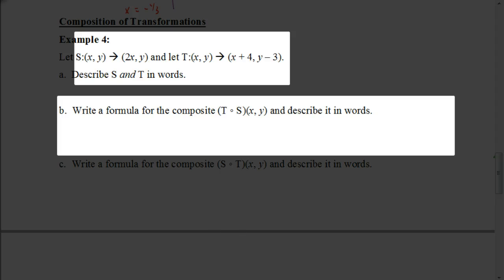So it's asking us to find the composite T following S for a coordinate (x, y). Now, just like the composition of functions, I could write this, if it makes it easier for you, like this. So this would be the composition of translation following our scale change. So what that means is we're going to put our scale change inside of our translation.